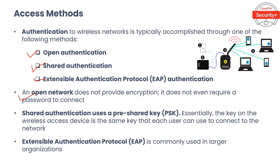Some open networks first require the user to connect through a captive portal, which is a webpage that is launched when connecting to a network. It usually requires some type of interaction before the user is allowed access to other networking or internet sites. Open networks might use captive portals for advertising or to provide terms of use. Such portals are common in public places such as airports and coffee shops. The user simply clicks accept, views an advertisement, provides an email address, or performs some other required action — the network then grants access.